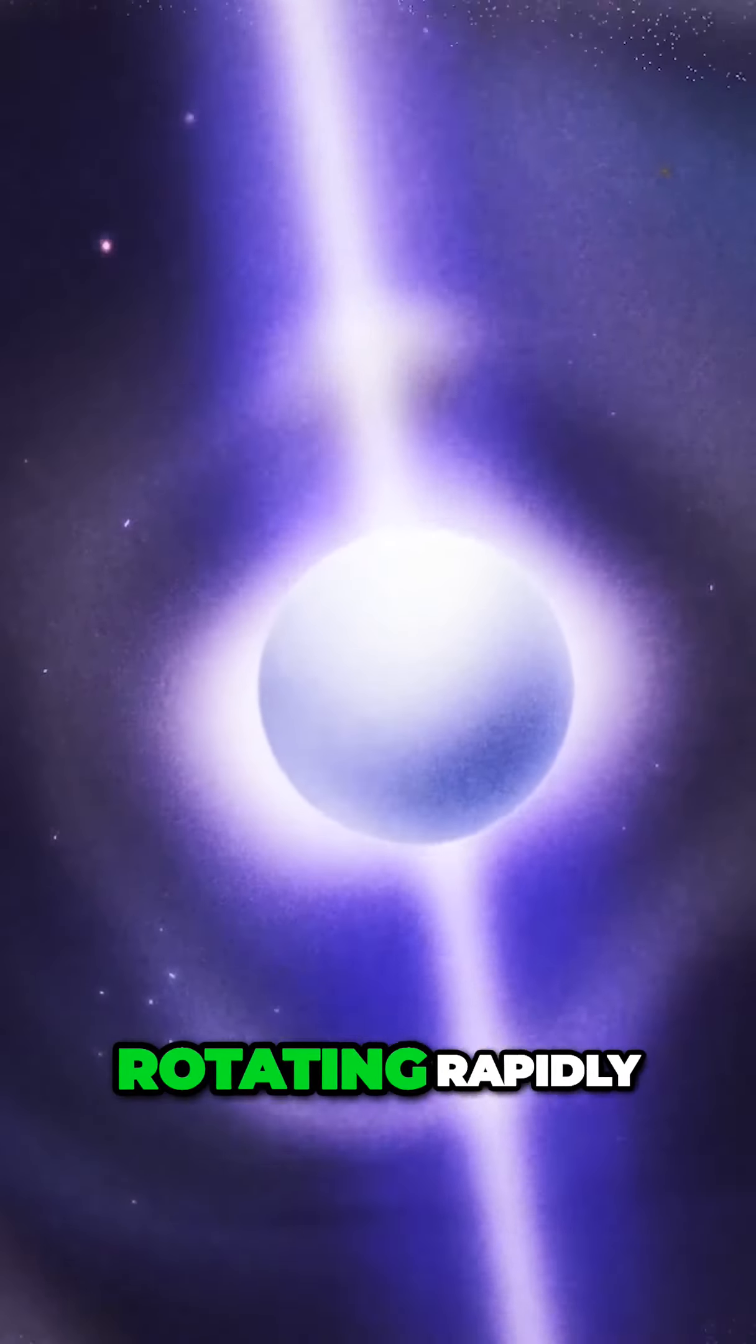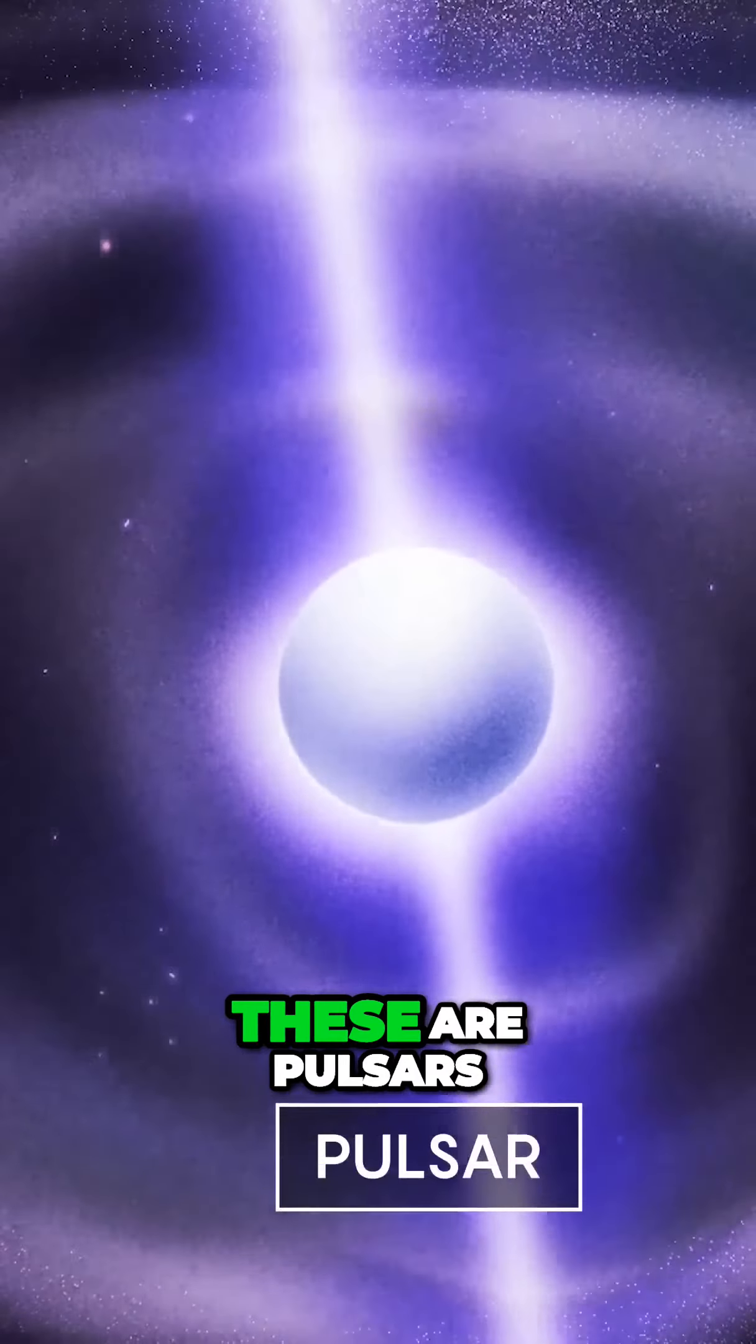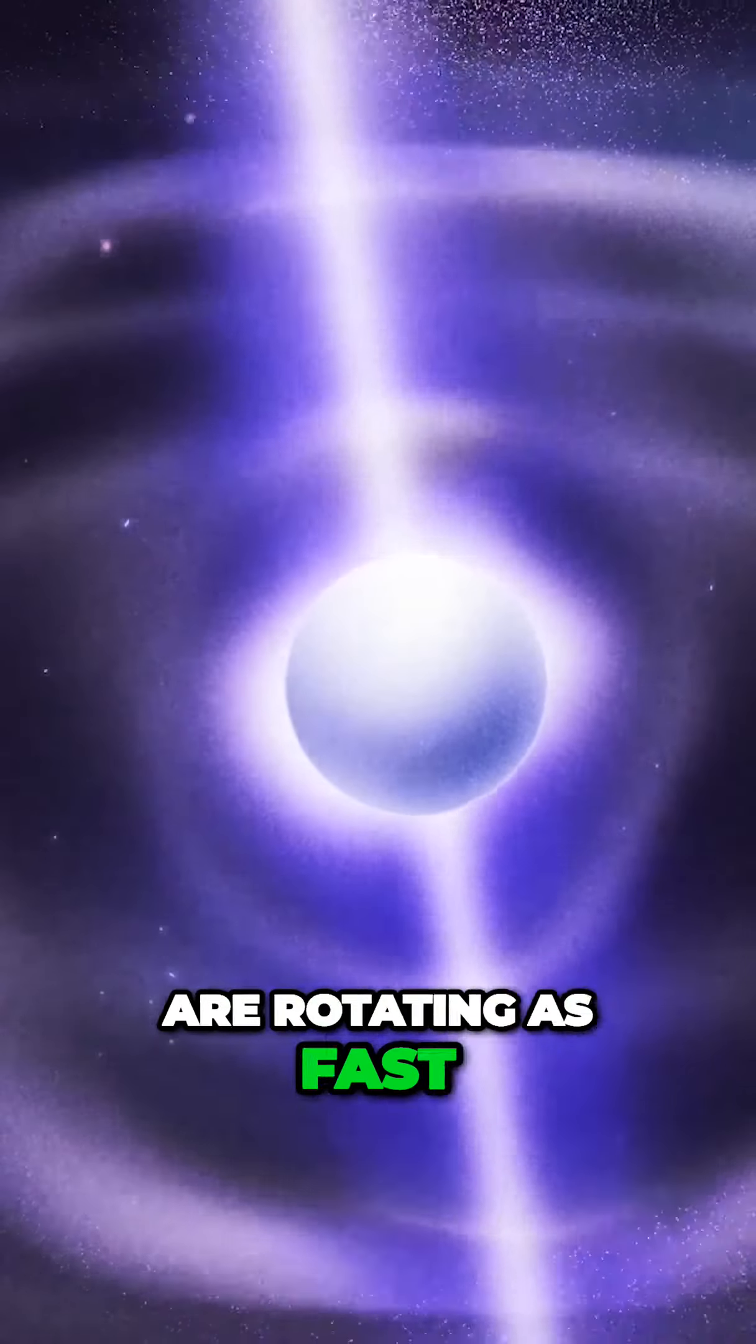Some neutron stars begin rotating rapidly, blasting out beams of radiation. These are pulsars. The kinds of pulsars that we use are rotating as fast as a kitchen blender.